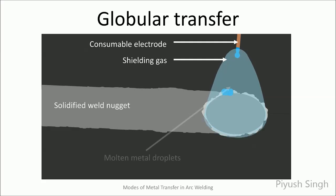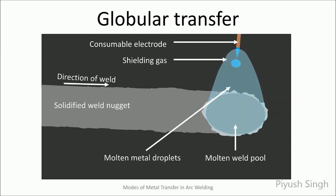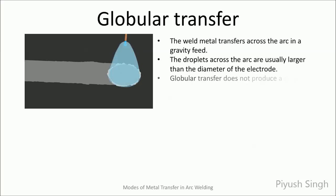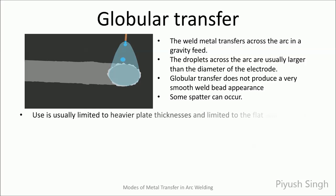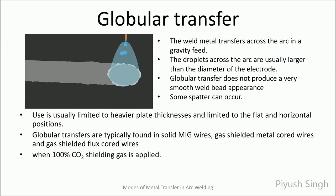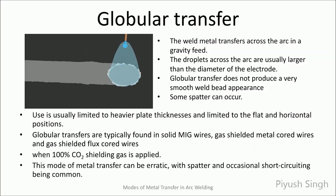This animation here shows globular transfer. The globular transfer mode uses gravity to transfer large globules of molten electrode. These globules are usually around three times the wire diameter. Due to the role played by gravity in this mode of transfer, its application is limited to flat and horizontal positions only. This mode of transfer does not give a very smooth weld bead appearance. Also, spatter is common and occasional short circuiting can occur due to the large globules.